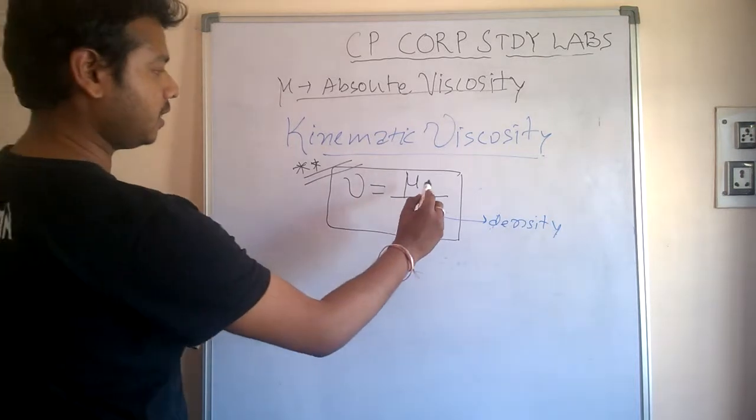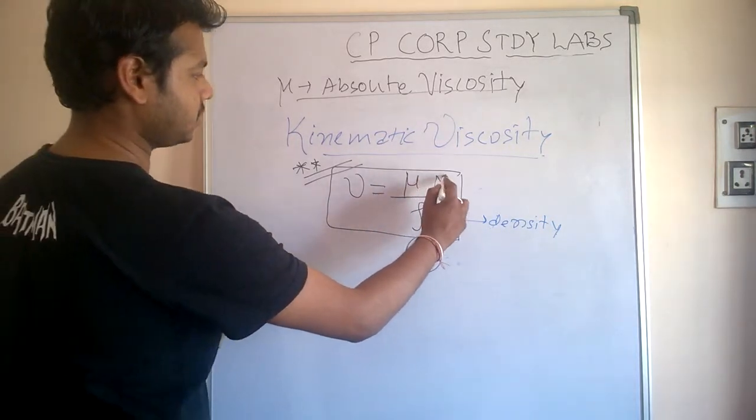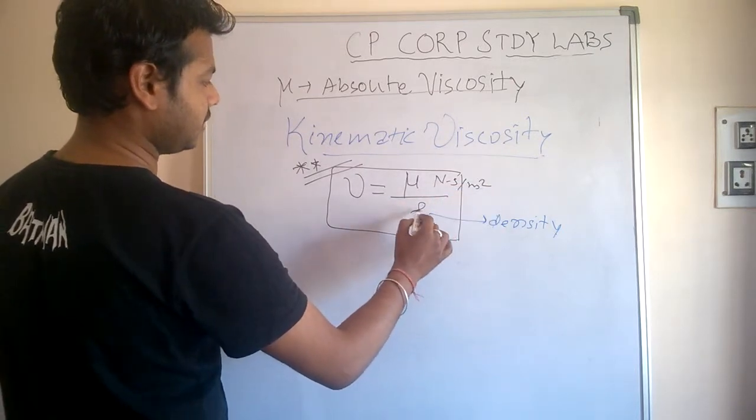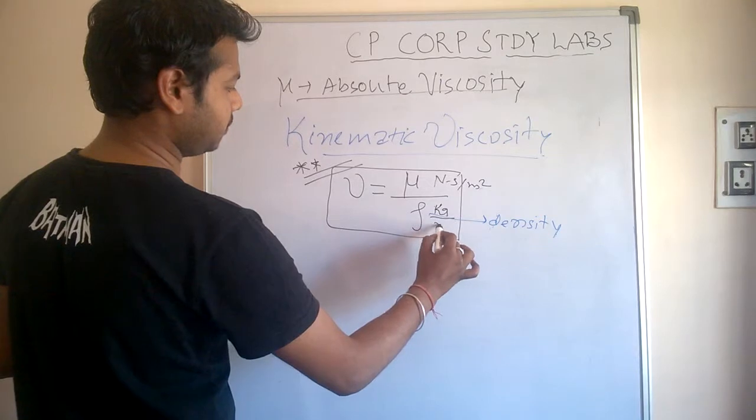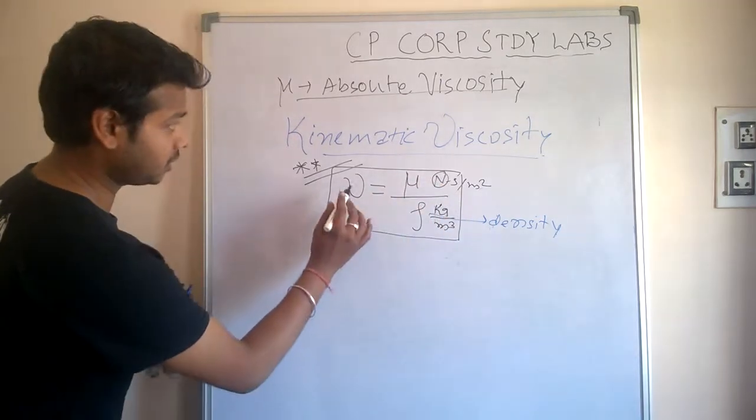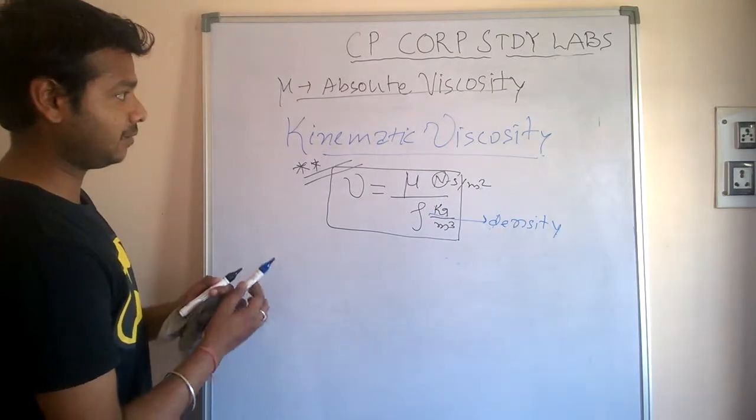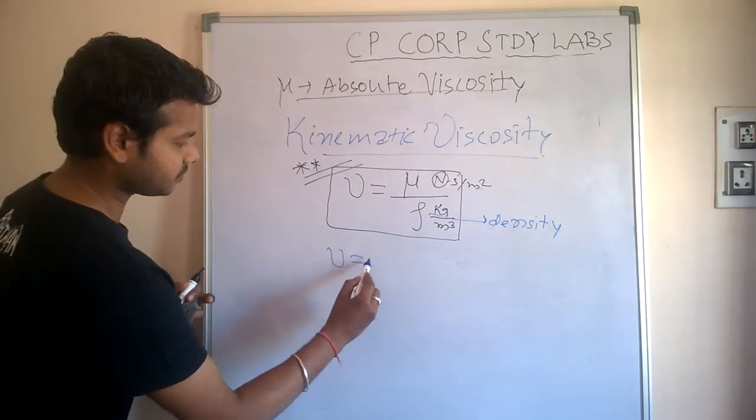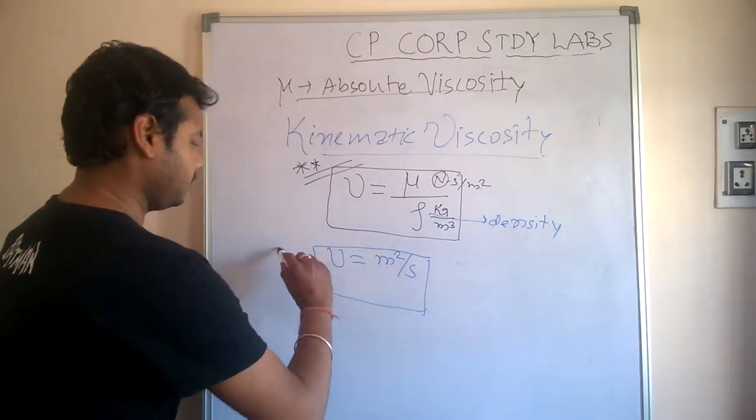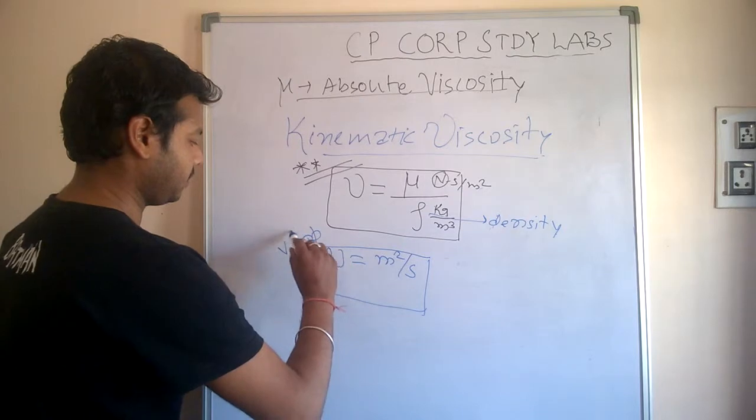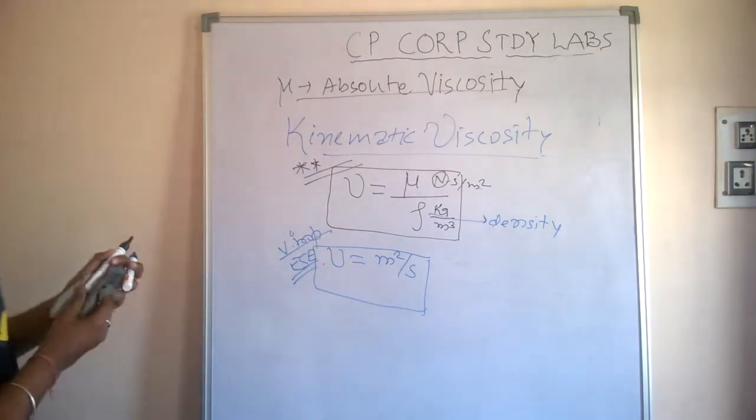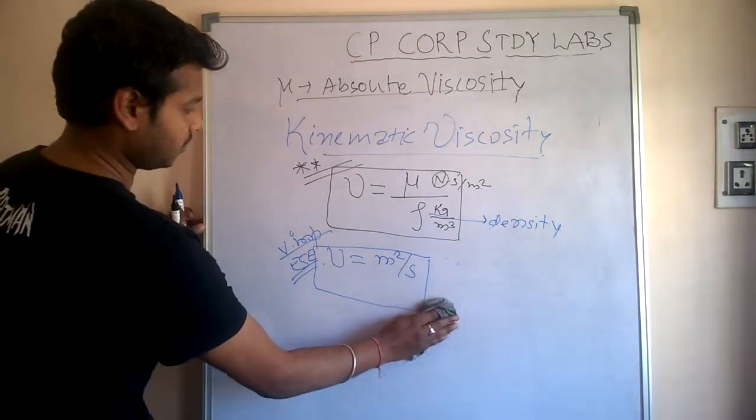Its unit: newton second per meter square. Density is mass upon volume. If you convert newton to kg, what you are going to get finally is the unit of kinematic viscosity as meter square per second. Very important - this also was asked. Yes, meter square per second.